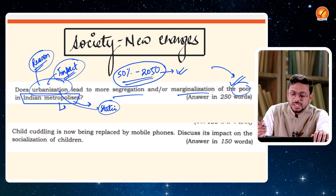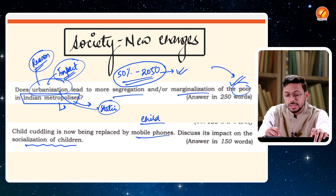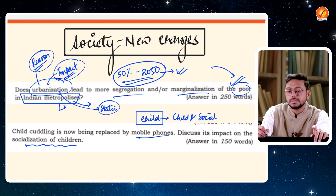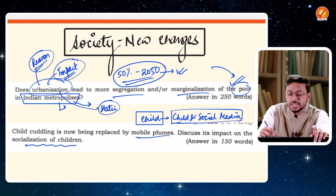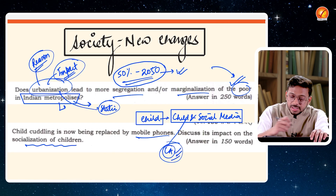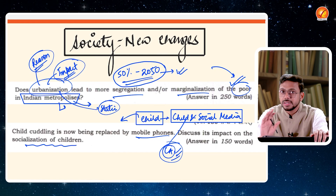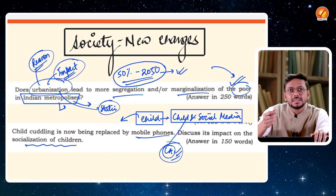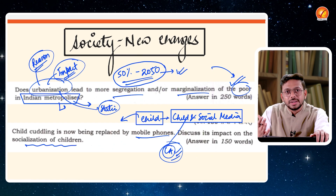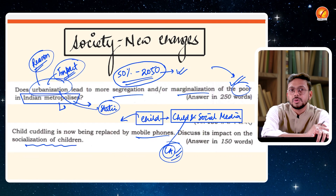The second question: child cuddling is now replaced by mobile phones — discuss the impact on socialization of children. The theme is 'child' and the exact topic is 'child and social media.' This is a current affairs based topic. Children as a subject is covered in static study, but child and social media is an emerging trend because of data privacy concerns, rising penetration of social media, digitization, and mobile phones entering the lives of people across the world. Every person today has a mobile phone. That is how current relevance is attached to the static portion in the mains examination.